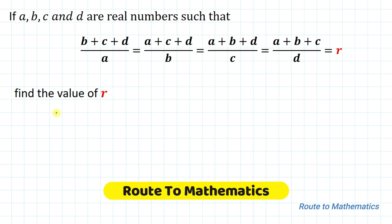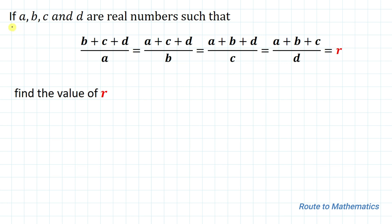Hello everyone, welcome to Root 2 Mathematics. In this video I am going to solve this interesting Olympiad question. The given question is: if a, b, c and d are real numbers such that (b+c+d)/a = (a+c+d)/b = (a+b+d)/c = (a+b+c)/d = r, then find the value of r. Without any delay, let's start the solution.